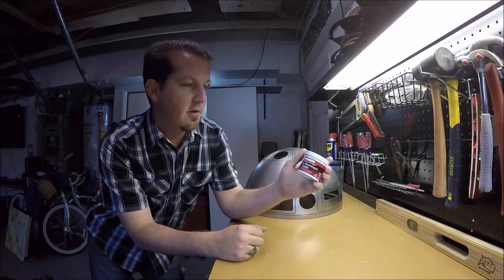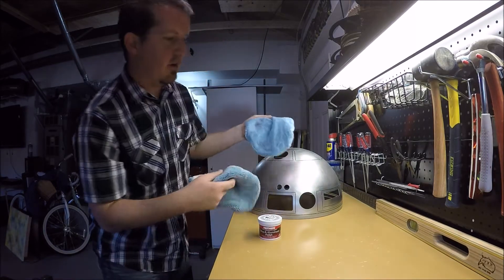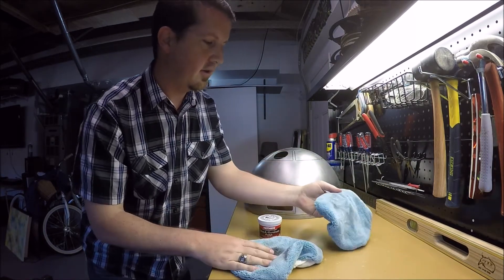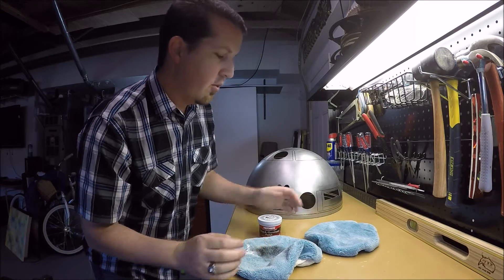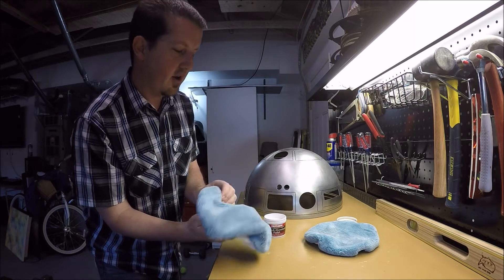I have Mother's Mag and Aluminum Polish which we'll be using today. I also have two terry cloths that I picked up at the auto parts store. What we're going to do is use a small amount on one terry cloth.